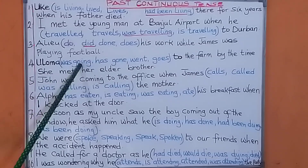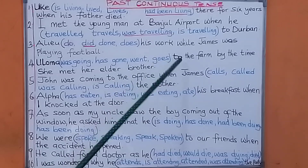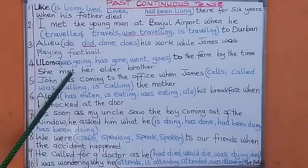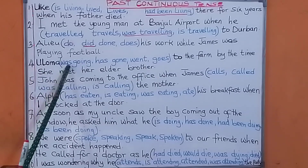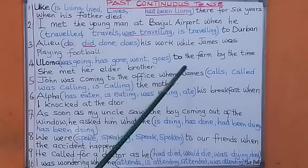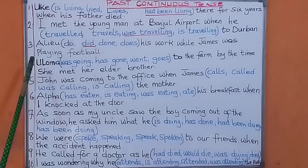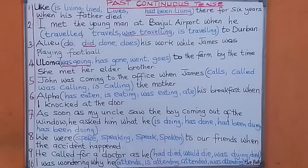Number four: Ulama — was going / has gone / went / goes — to the farm by the time she met her elder brother. Remember 'met' is past tense. The answer: Ulama was going to the farm by the time she met her elder brother.